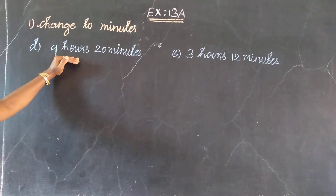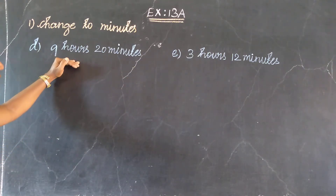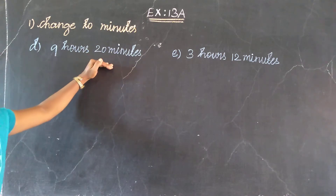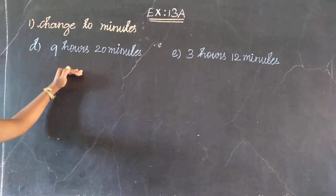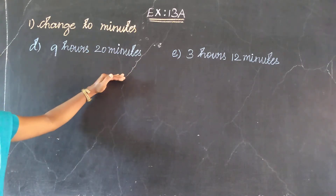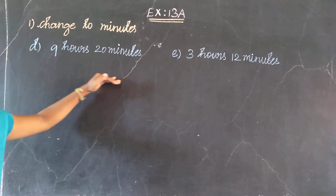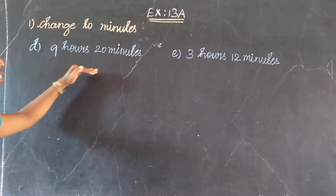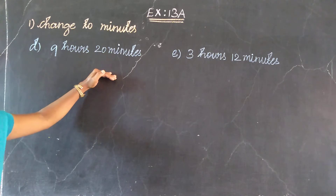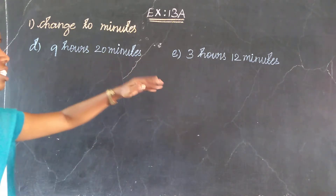First value, the problem: 9 hours 20 minutes. 9 hours 20 minutes. Okay. So, in this, 9 hours 20 minutes — to change into minutes.